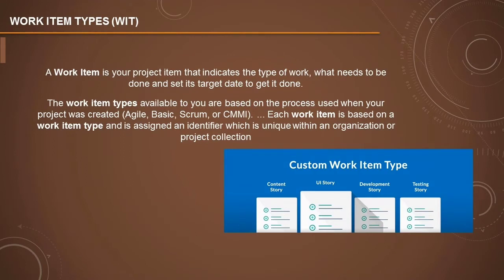When you talk about Scrum or Agile development model, there are a lot of work item types. Work items are basically helpful to determine how you will be processing your project and what kind of work items will be required. A work item in your project is an item that indicates the type of work that needs to be done and sets its target date to get it done. Creating an epic, user story, task, and other artifacts throughout the life cycle are measurable units, helping you determine how activities will be broken into simpler forms. We put all these artifacts together and call them work item types, or simply WIT.